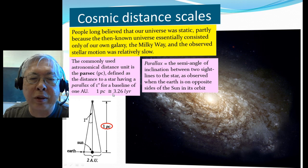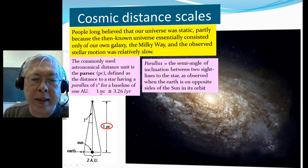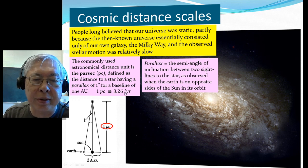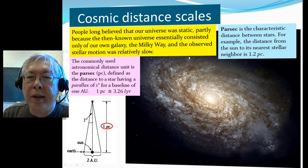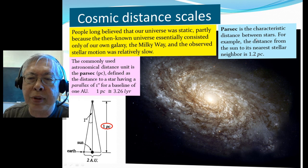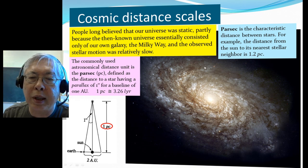And then if you work it out to a distance which may be more familiar to physics students, one parsec is about 3.26 light years. Parsec is the characteristic distance between stars. For example, from the Sun to the nearest stellar neighbor is about 1.2 parsec.